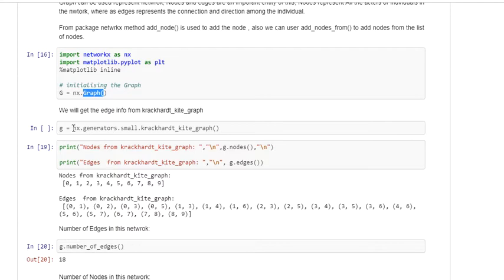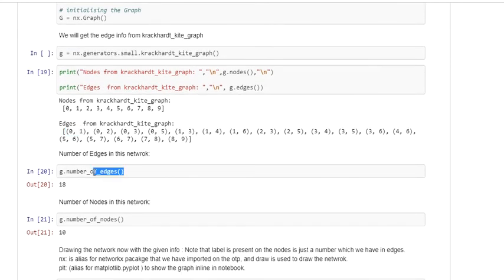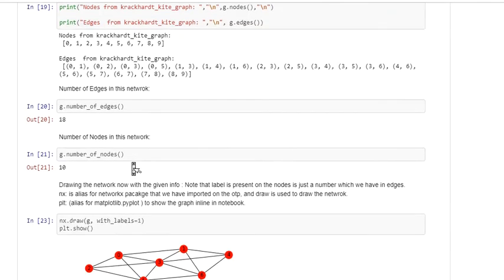I'm using one of the inbuilt NetworkX methods to generate the edges and storing it into another G variable. I can use G dot nodes and G dot edges to display the number of nodes and different edges that belong to this variable. I can also use number of edge method and number of nodes method to display the respective numbers.